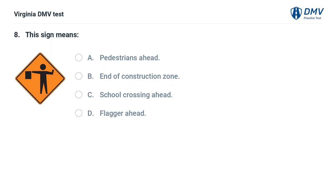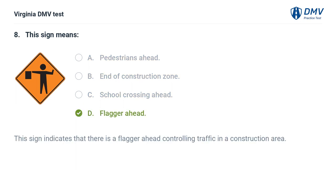This sign means: A. Pedestrians ahead, B. End of construction zone, C. School crossing ahead, D. Flagger ahead. The correct answer is D: Flagger ahead. This sign indicates that there is a flagger ahead controlling traffic in a construction area.